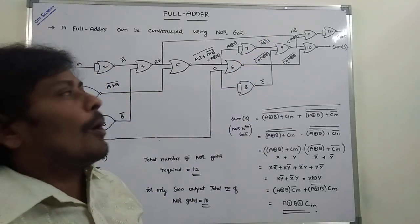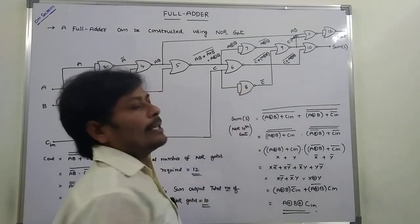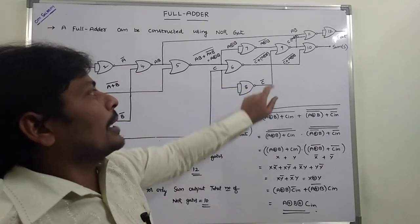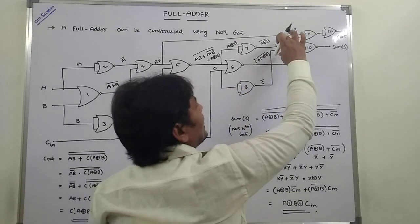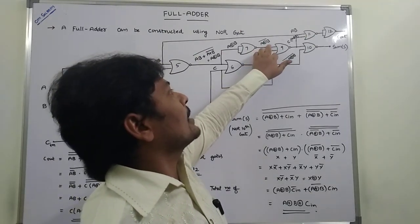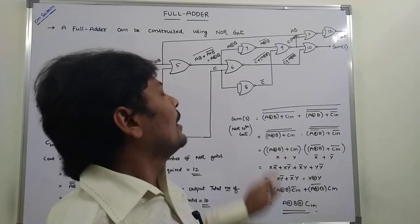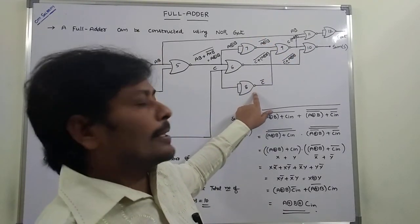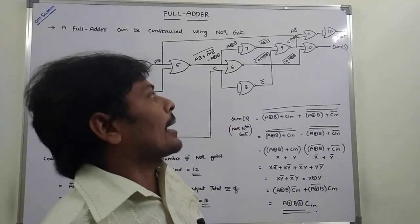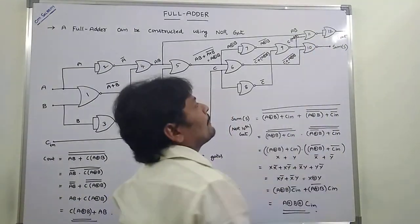The seventh NAND gate takes A XOR B as both inputs, giving output (A XOR B)'. The eighth NAND gate takes C as input, giving output C'. The ninth NAND gate takes the seventh NAND gate output (A XOR B)' and the eighth NAND gate output C' as inputs, giving output C·(A XOR B).